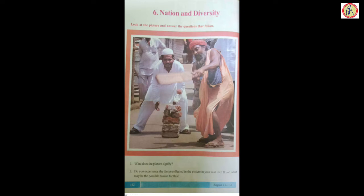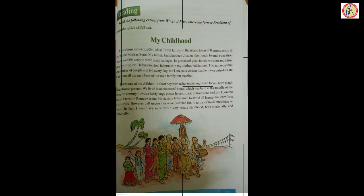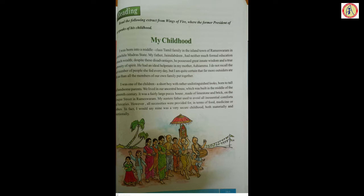Now going to our reading. Read the following extract from Wings of Fire where the former President of India speaks of his childhood. This is the biographical account of A.P.J. Abdul Kalam, the former President of India. In this, he says how he enjoyed religious harmony in his childhood. From this biographical account, one can easily understand how children enjoy their childhood at school irrespective of caste and religion.